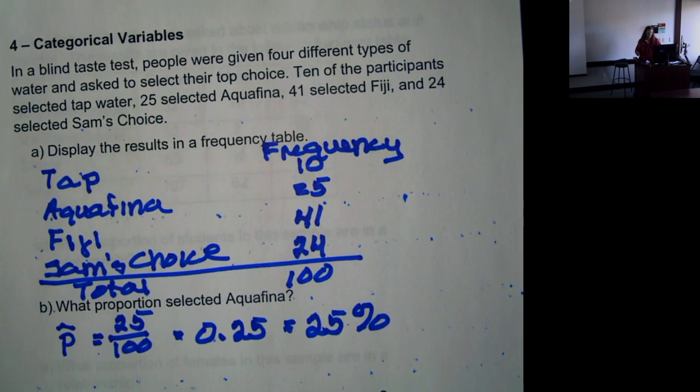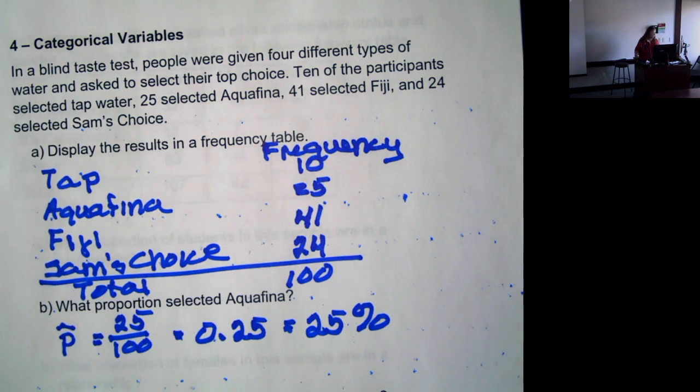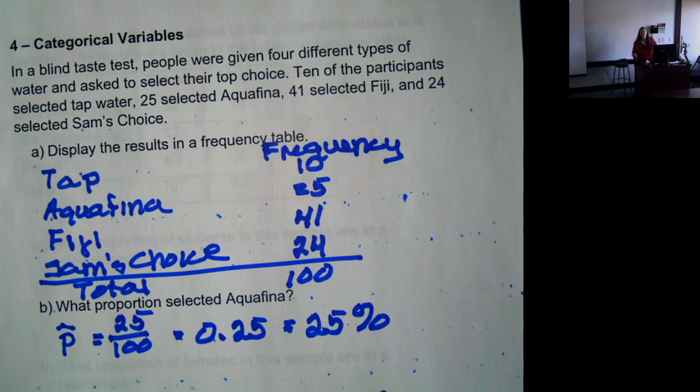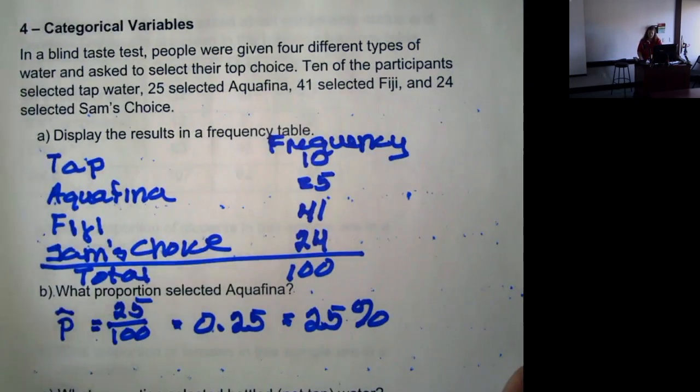So relative frequency table is just taking a frequency table and finding what part of the whole fits into each category.